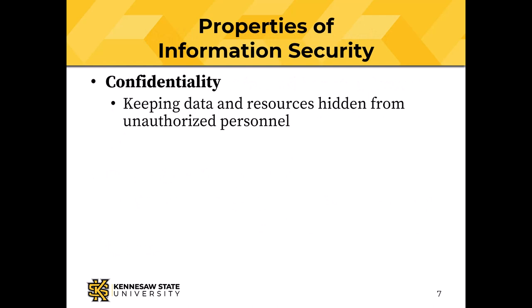There are three properties of information security — and I almost guarantee these are going to be on the final exam. The first property is confidentiality: keeping data and other resources hidden from unauthorized personnel. We ask how we know who's authorized, and the answer is policy.